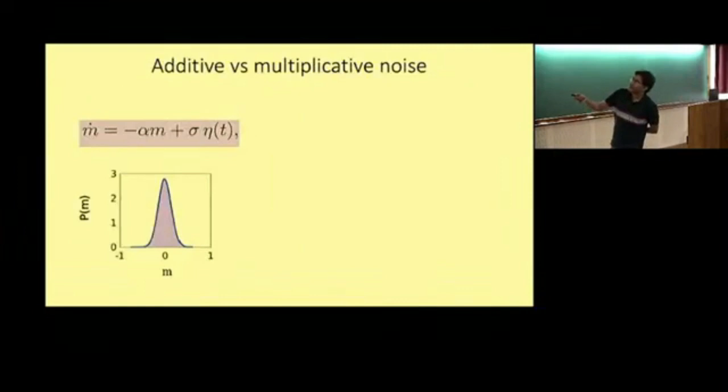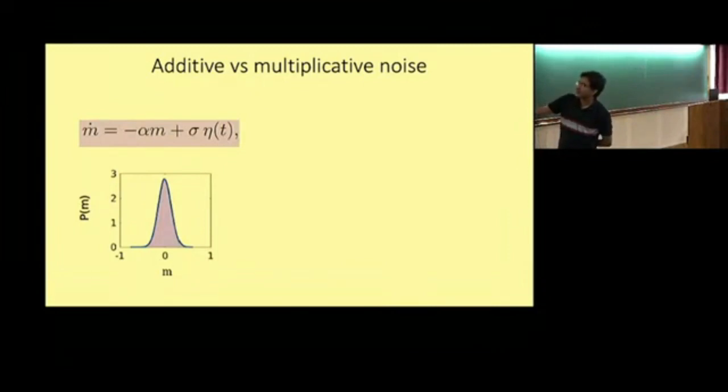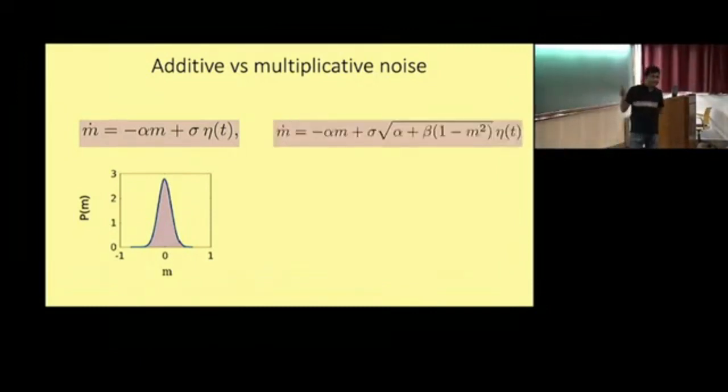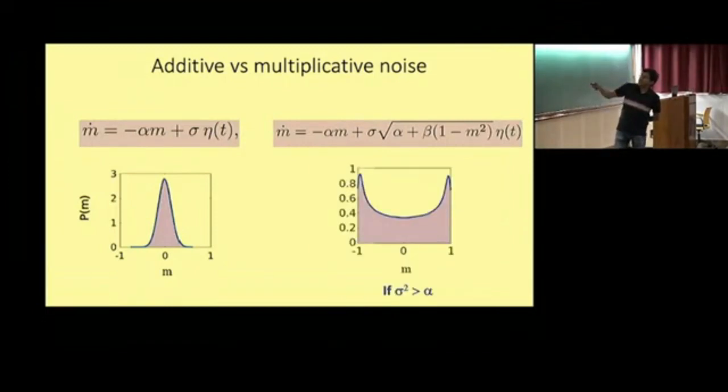I want to emphasize one thing here. So typically, when we think of simple Langevin equation with additive noise, the state of the system is around the deterministic stable equilibrium. So in this case, M is equal to zero is a stable equilibrium, assuming alpha is positive. So this is what the PDF you expect. However, when you have a multiplicative noise like this, look at the multiplicative noise term. Exactly when M is equal to zero, this term is maximum. And if the strength of this noise is above some threshold value, what you actually get is stable states, modes of the PDF, which are away from the deterministic stable state. And these are called noise-induced states, where basically a multiplicative noise drives the system away from deterministic stable equilibrium. It can produce modes which are where you don't even expect.